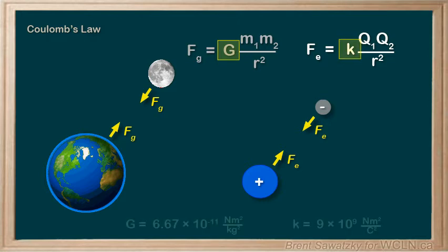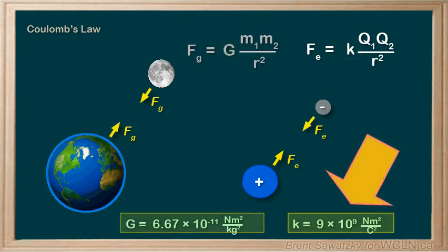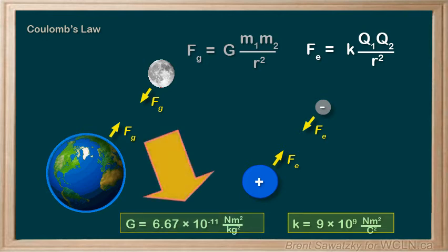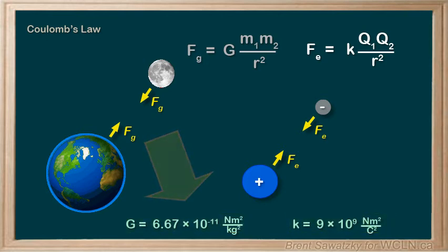Now, if we look at these constants, the electrostatic constant k is a huge number, while the gravitational constant G is a very, very small number.